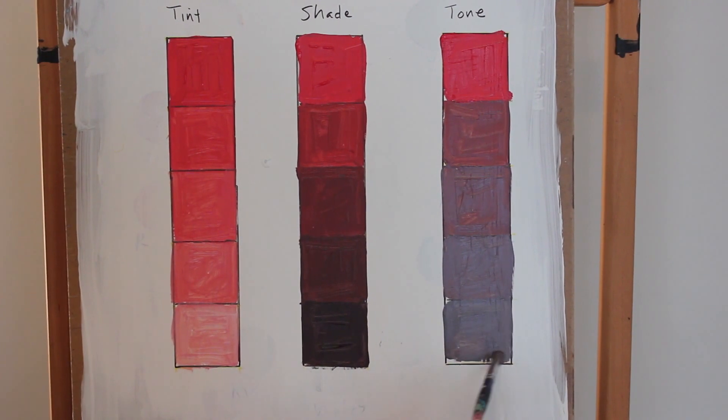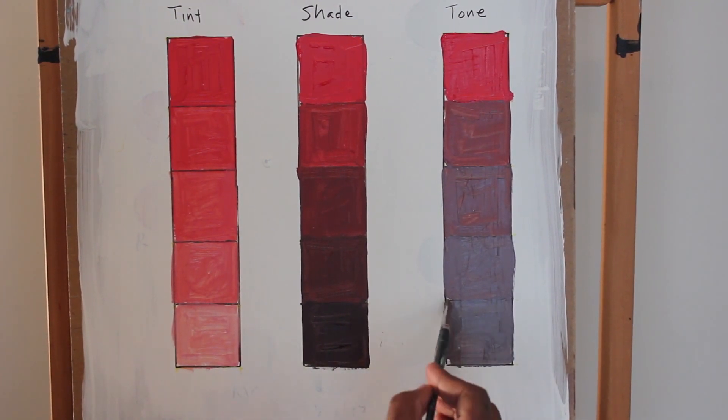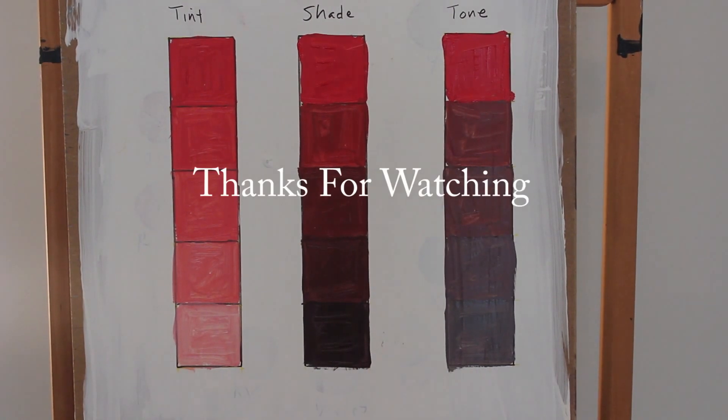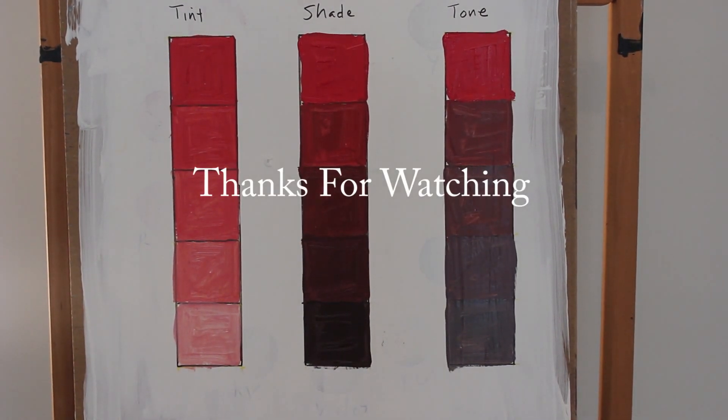Now, if you just glance at this, it almost looks just like regular gray, but again, if you look closely, you can see the red in it. That's pretty much it for the tone. This kind of gives you an idea of how to manipulate color and how to get certain colors that you want. Thanks for watching.